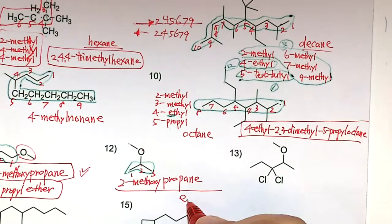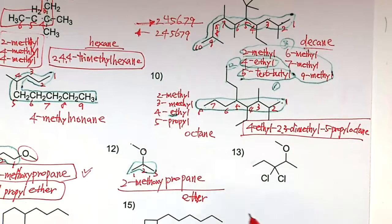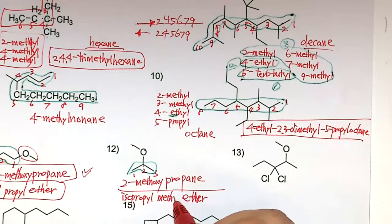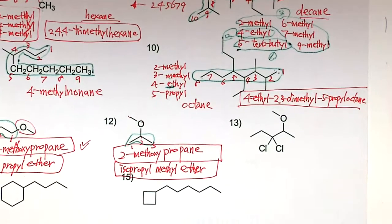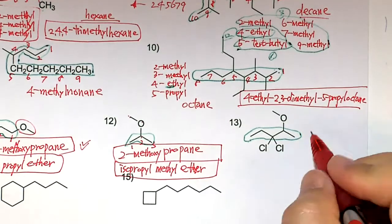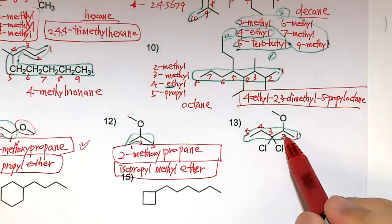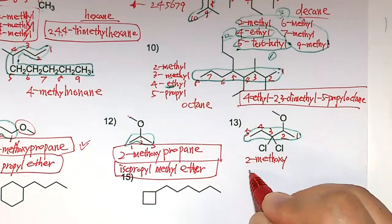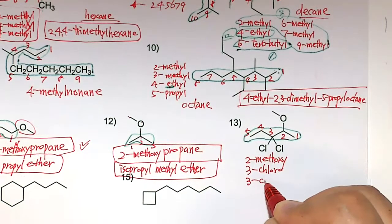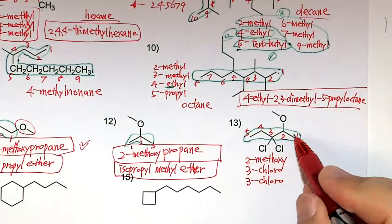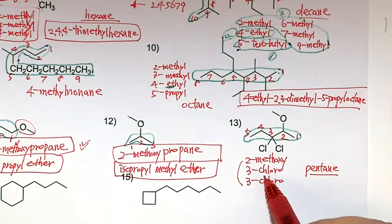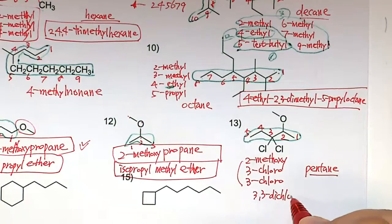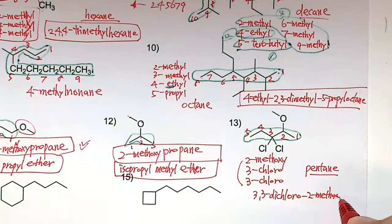Another ether example: the longest chain is 3 carbons — propane. Number 2 has methoxy. So it's 2-methoxypropane. Common name: C-O-C is ether. Left side methyl, right side isopropyl. I-word comes first: isopropyl methyl ether. IUPAC: 2-methoxypropane. Another example: longest chain 1-2-3-4-5 — pentane, giving branch at position 2. So it's 2-methoxy-3,3-dichloropentane. C comes before M: 3,3-dichloro-2-methoxypentane.